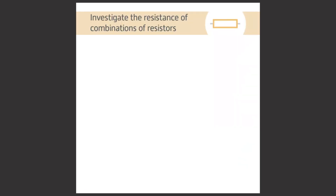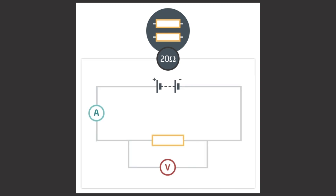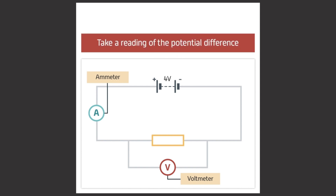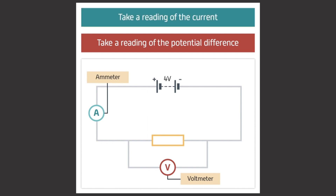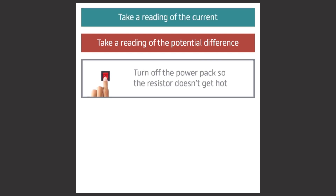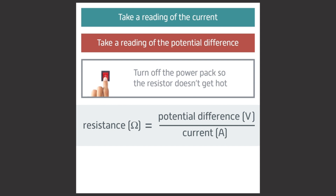Now let's investigate the resistance of combinations of resistors in series and parallel. You'll need two fixed resistors of say 20 ohms each. Set up a circuit with one 20 ohm resistor in it. Place an ammeter in series with the power supply and the resistor, and place a voltmeter in parallel with the resistor. Set the power supply to 4 volts and switch it on. Take a reading of potential difference from the voltmeter and a reading of current from the ammeter. After taking your readings, turn off the power pack so the resistor does not get hot. Use the formula resistance equals potential difference divided by current to calculate the resistance of the resistor — it should equal 20 ohms.